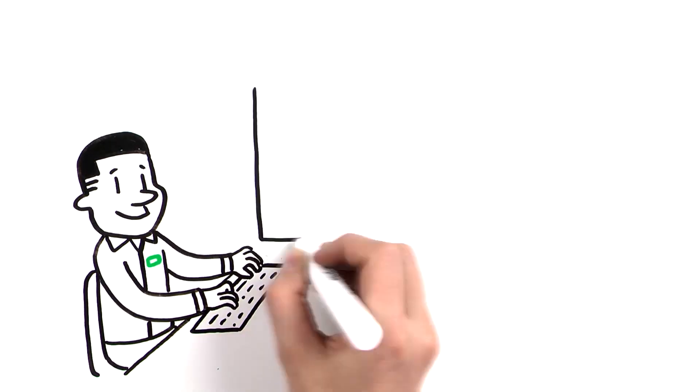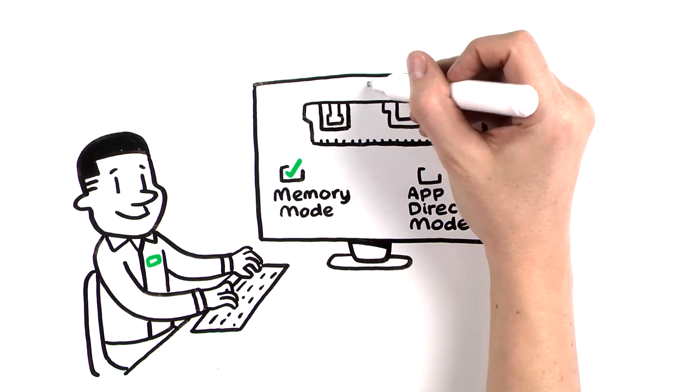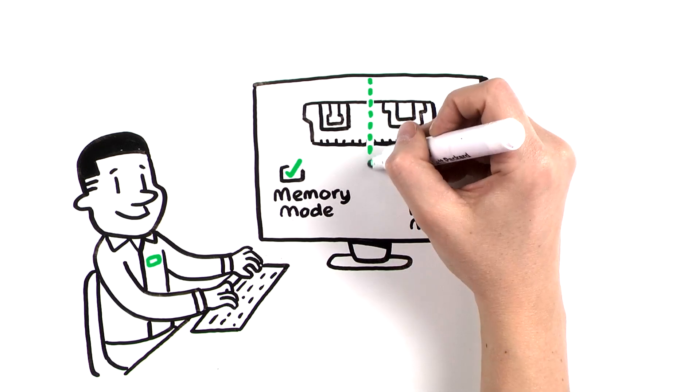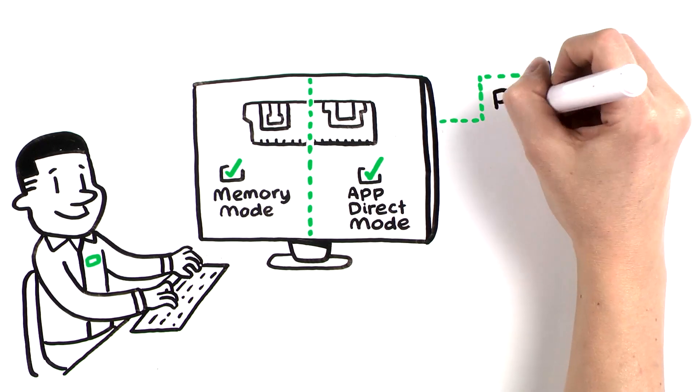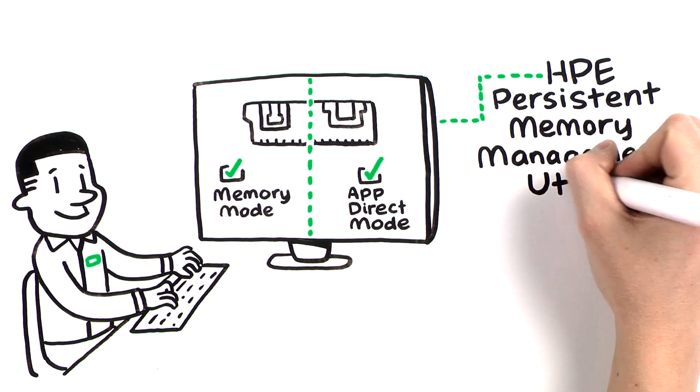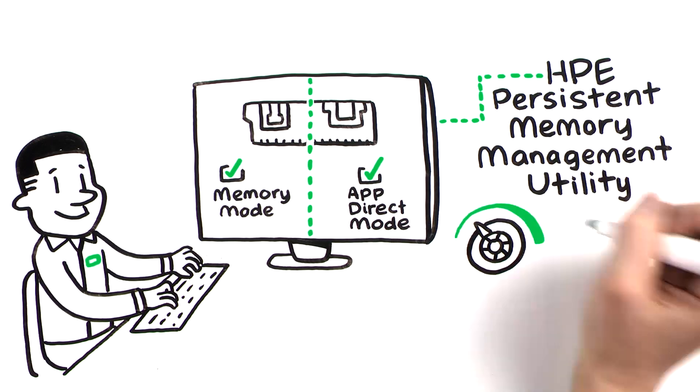System administrators can choose which operating mode to enable, and can even partition memory to operate in different modes simultaneously. Administrators can also use a unique desktop app called the HPE Persistent Memory Management Utility to manage and optimize their system.